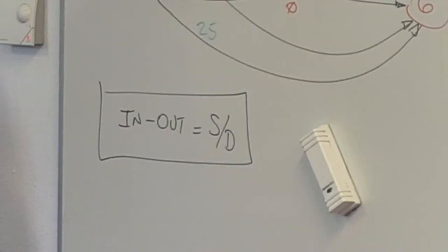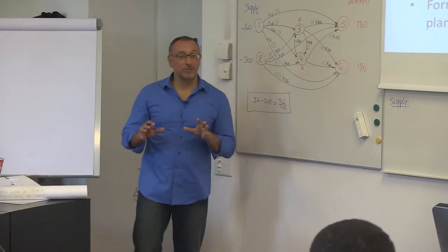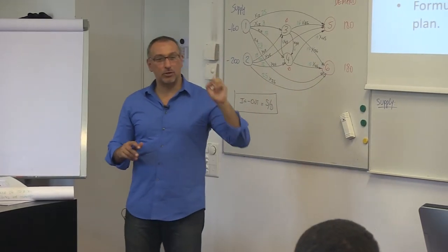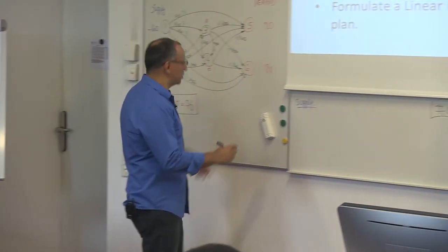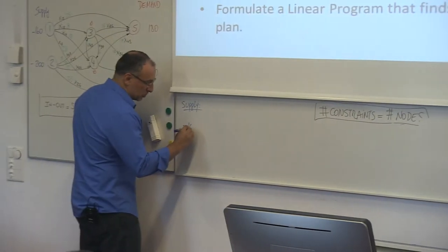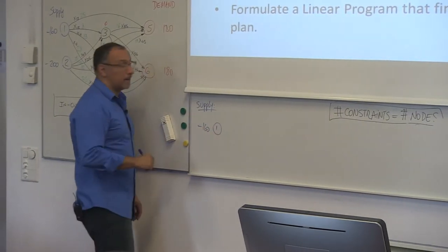How can we go about doing that? Look, we have some supply constraints, we have some demand constraints, and we have the transshipment node constraints. But more generally, we can just think about in minus out equals the supply or demand. All right, let's take this node, and what I'm going to do is break it down so that you can visualize the balance of flow rules. So I'm actually going to draw the node here, and I have supply is minus 160, I have node 1.